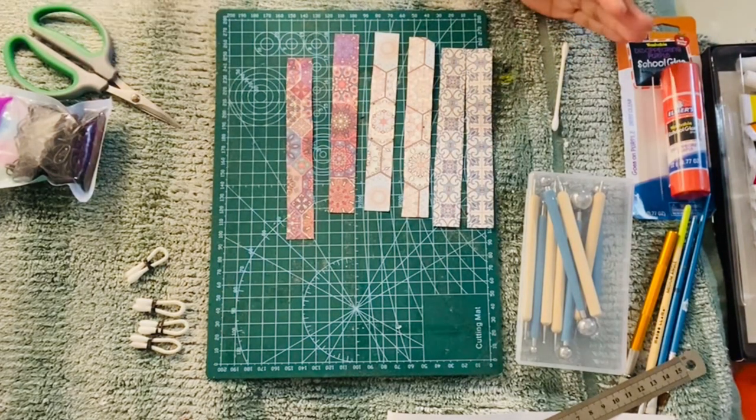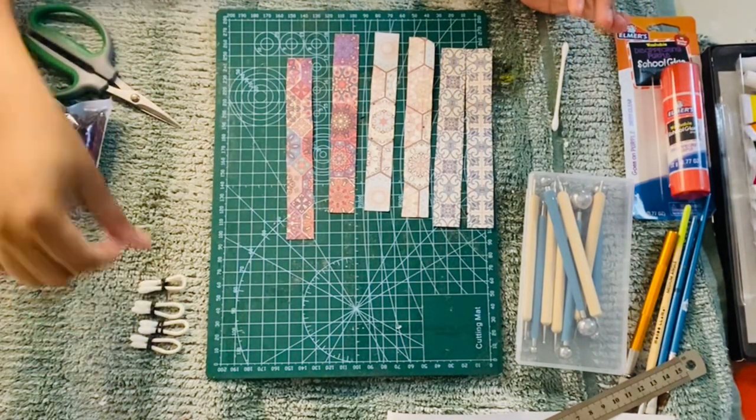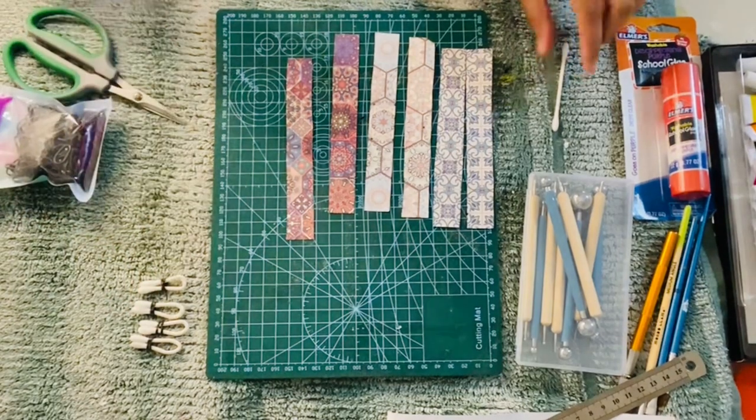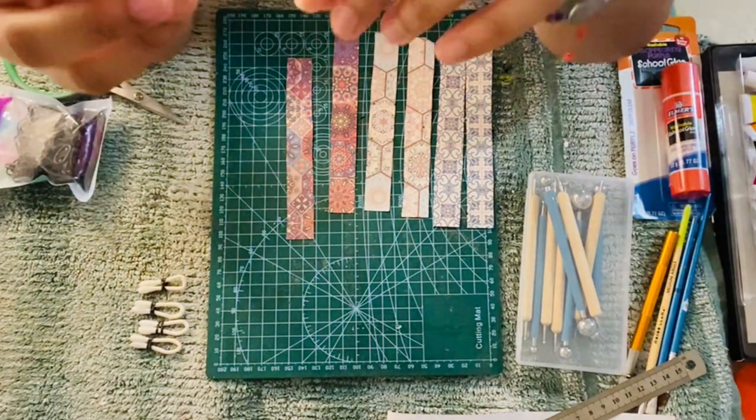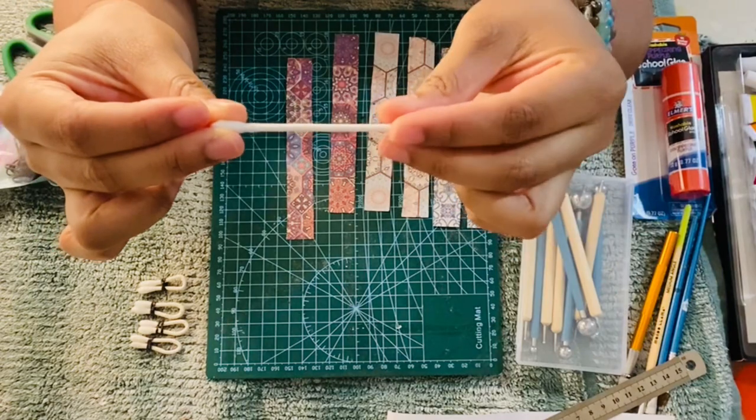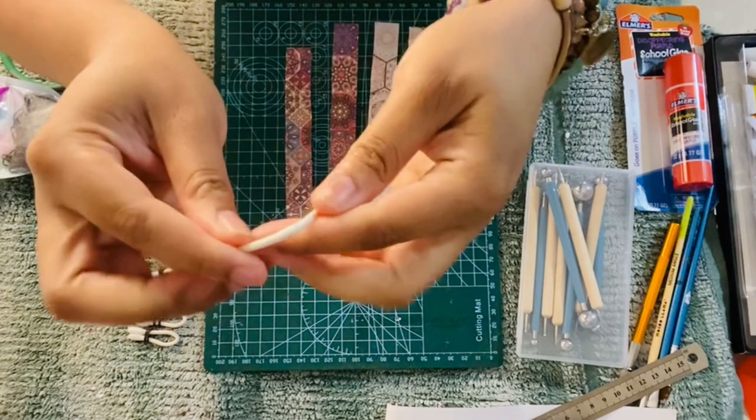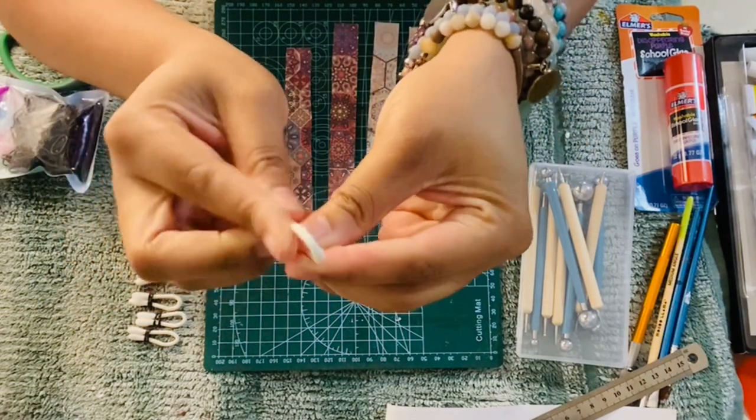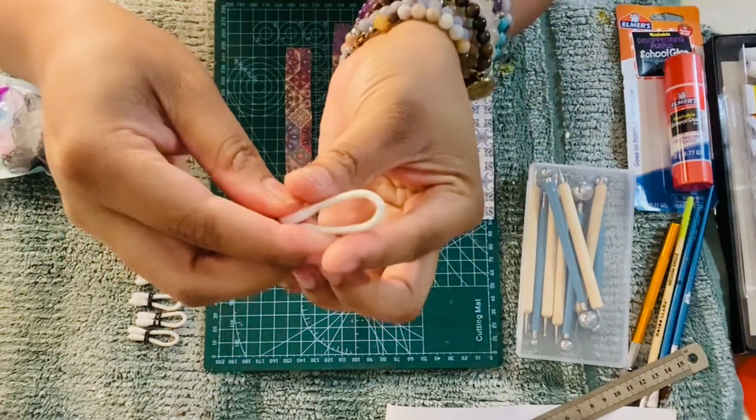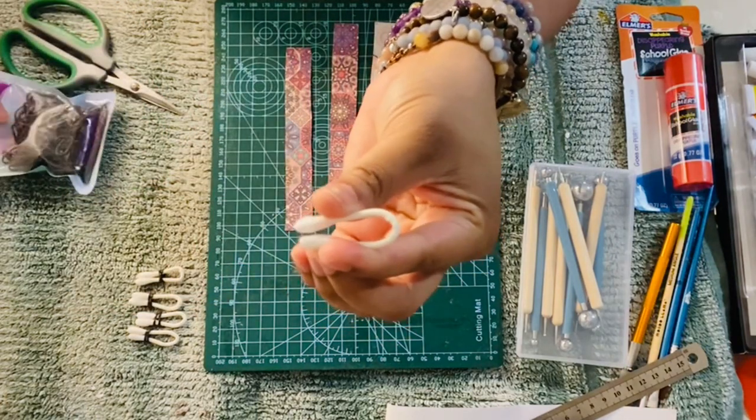You guys are probably wondering what this is on the side. These are our handles. To make our handles you're going to use a Q-tip and then wet it. Once you wet it, you're going to bend it at the middle to make a curve for a handle.